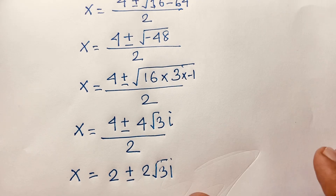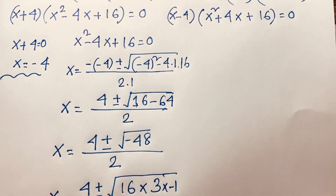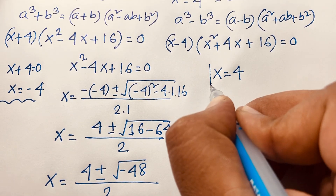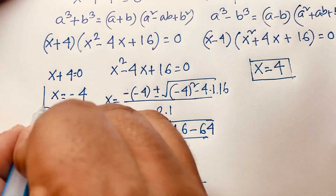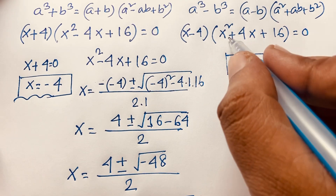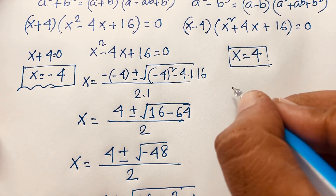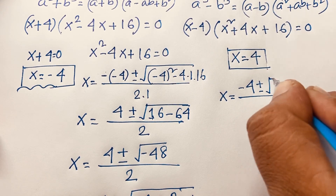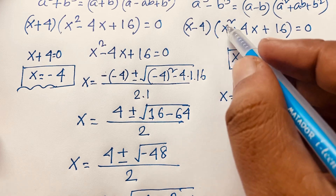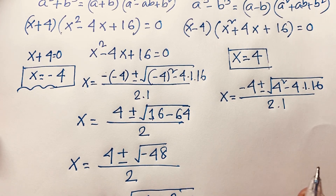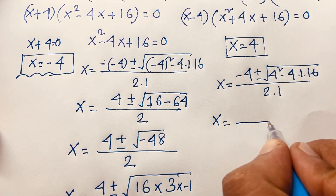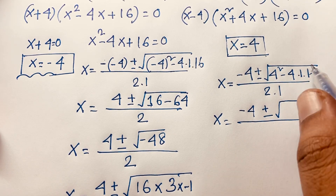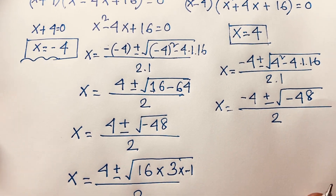The real solution from this case is x equals negative four. Now for the other case: x minus four equals zero, so x equals four — this is our other real answer. Then for the quadratic equation x squared plus four x plus sixteen equals zero, we apply the quadratic formula again: x equals minus b, where b is four, plus or minus square root of four squared minus four times one times sixteen, over two times one.